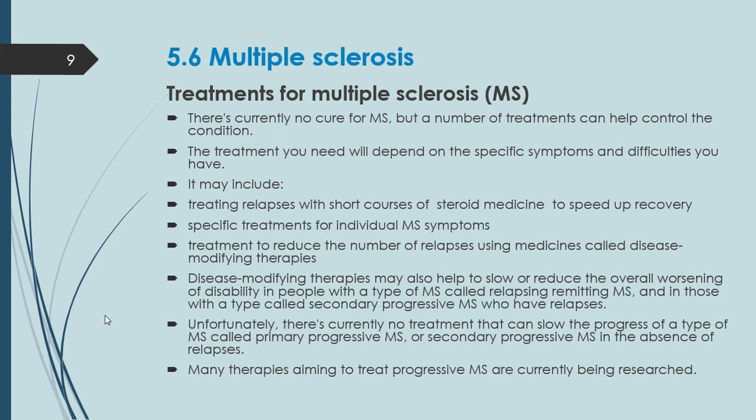Unfortunately there is no treatment that can slow primary progressive MS or secondary progressive MS in the absence of relapses. Many therapies aiming to treat progressive MS are currently being researched.